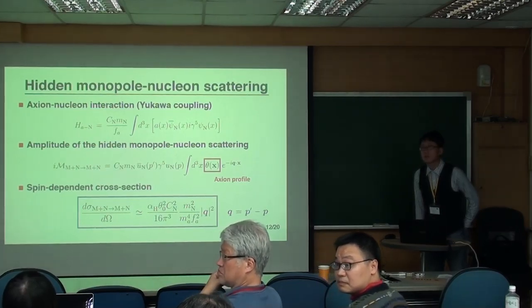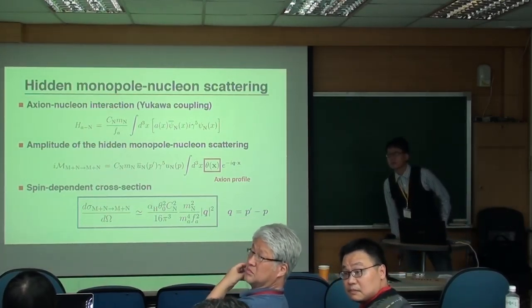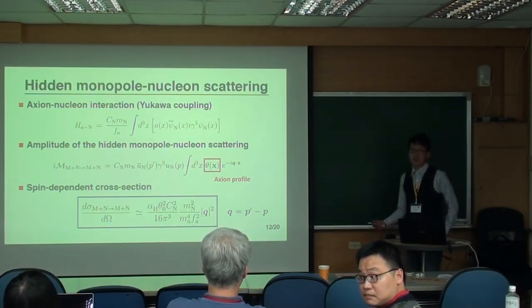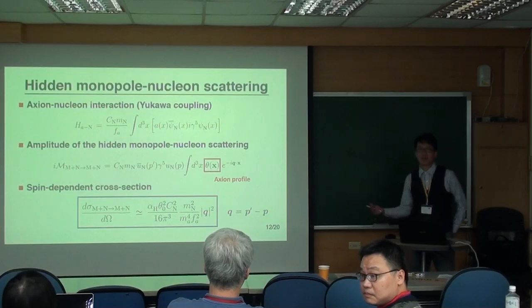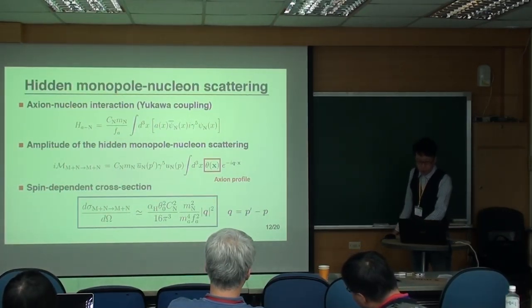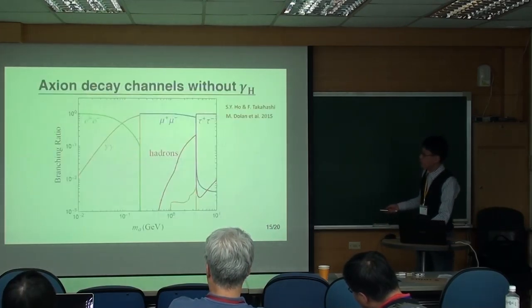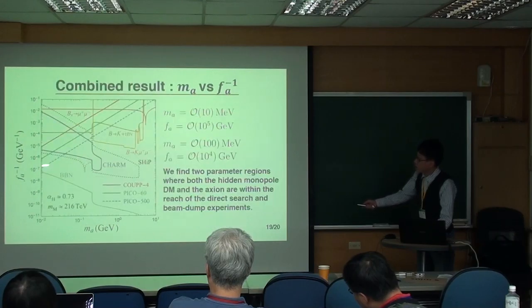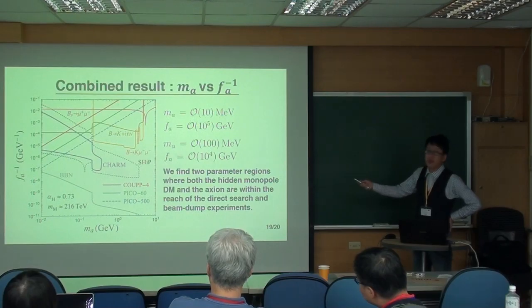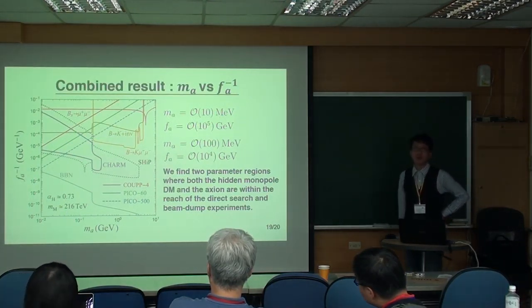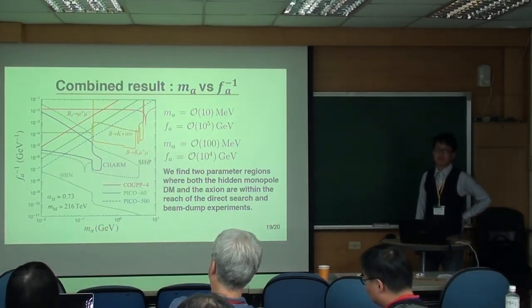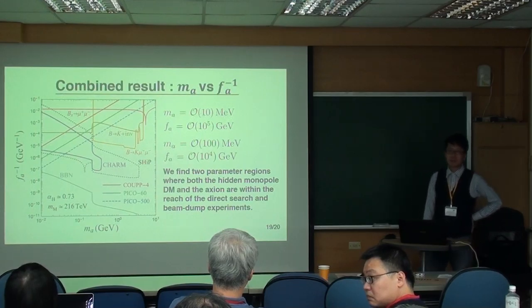It seems that you didn't consider the constraint from supernova cooling. Oh, okay. So that depends on the axion mass. Yeah. You're right. But if you consider the supernova cooling, actually this region may be excluded. But there's an axion mass regime. Otherwise, they have another parameter space where the axion is hard to produce. So yeah, you're right.